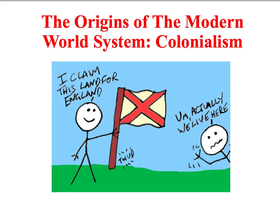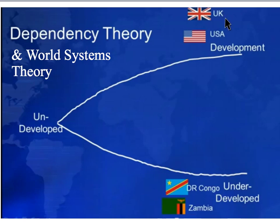Both Dependency Theory and World Systems Theory developed as a critique of Modernisation Theory, arguing that it is built on a faulty premise. In assuming that all countries can become more like the West, Modernisation Theory leaves out an important historical period called colonialism. Whilst rich countries such as the UK were once undeveloped and then became more developed, they never went through a process where they were actively underdeveloped. In fact, a country like the UK experienced development because it was able to extract and exploit resources from its colonies — a process referred to by both theories as underdevelopment.